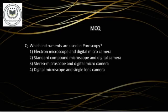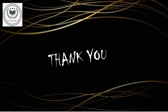Now it's time for MCQ. The question is: which instruments are used in poroscopy? Option 1: Electron microscope and digital micro camera. Option 2: Standard compound microscope and digital camera. Option 3: Stereo microscope and digital micro camera. Option 4: Digital microscope and single lens camera. Do mention your answers in the comment section. Hope you all understood the topic and enjoyed it throughout the video. If you have any doubts, please do mention in the comment section. Thank you for watching.